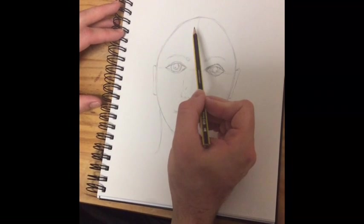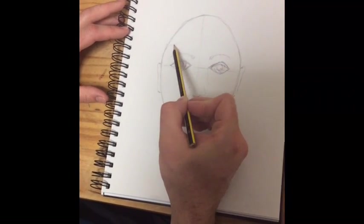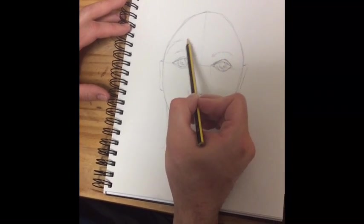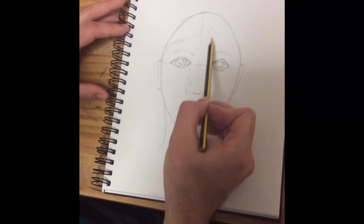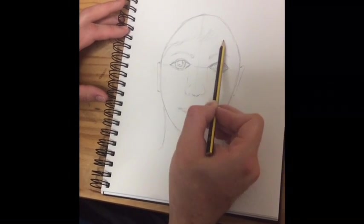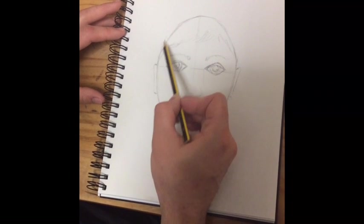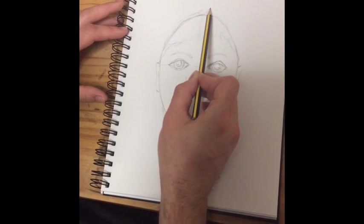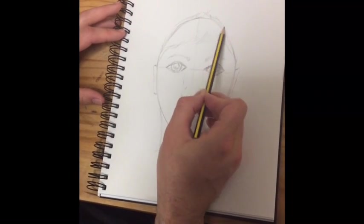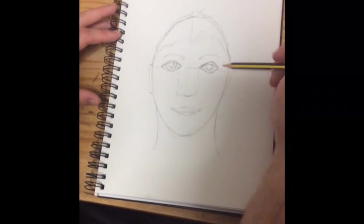When we add our hair, obviously everybody has different hair. I'm just going to start adding a few lines in to show where the hair is there. And the hair will also cover the top line of the shape of the head that we drew earlier on.